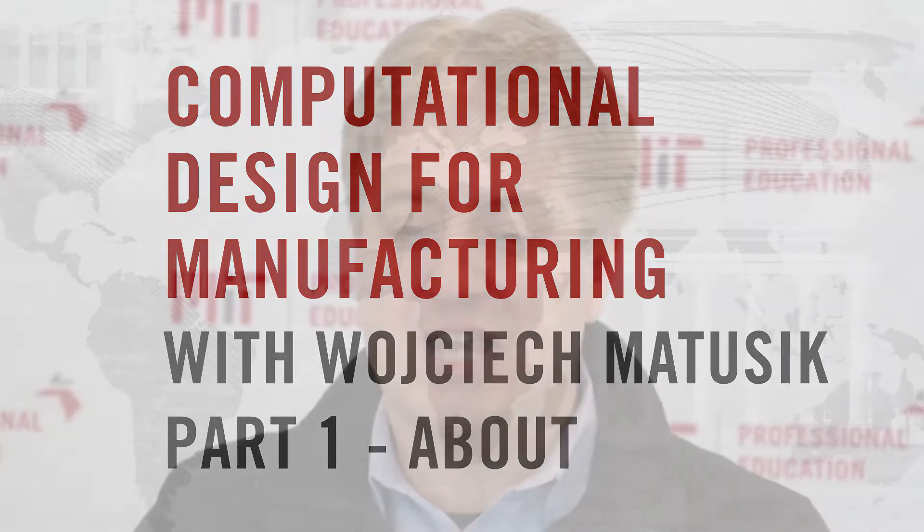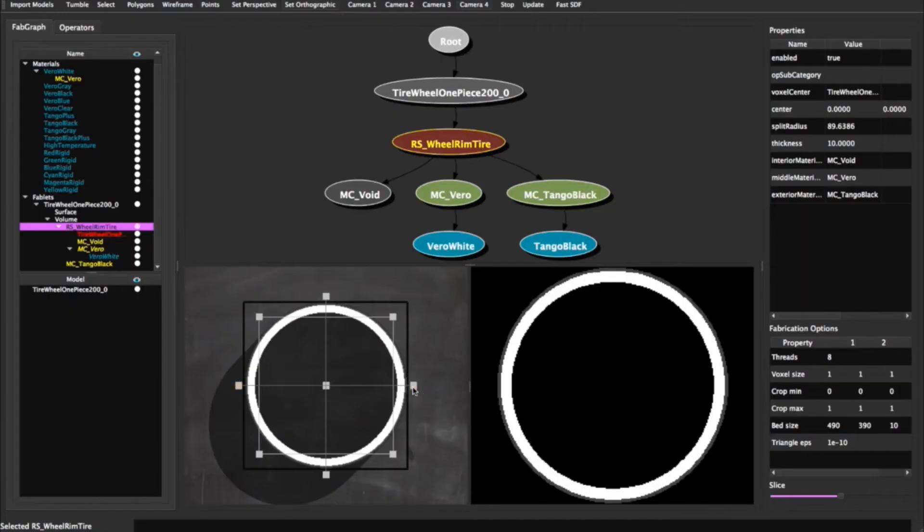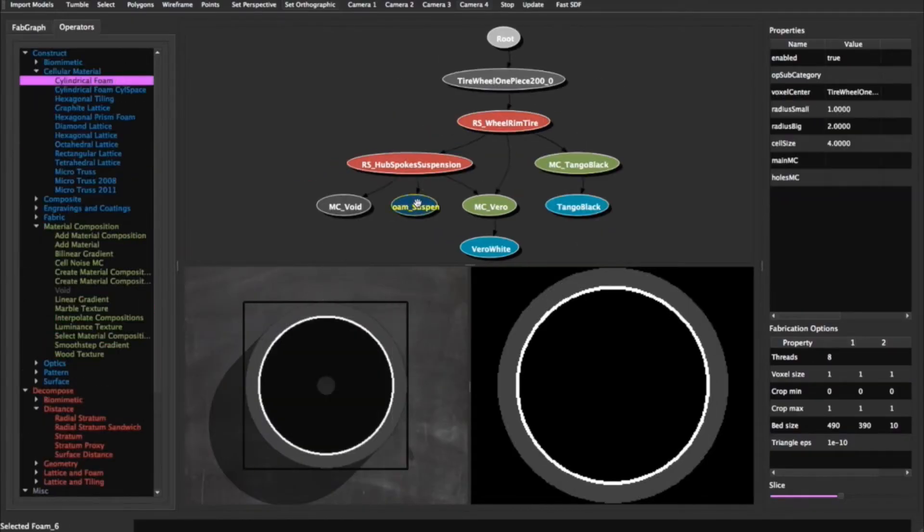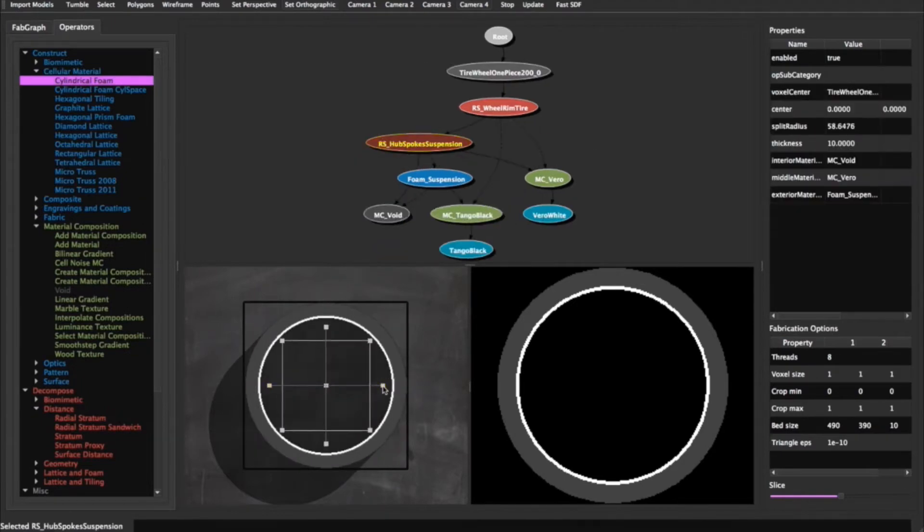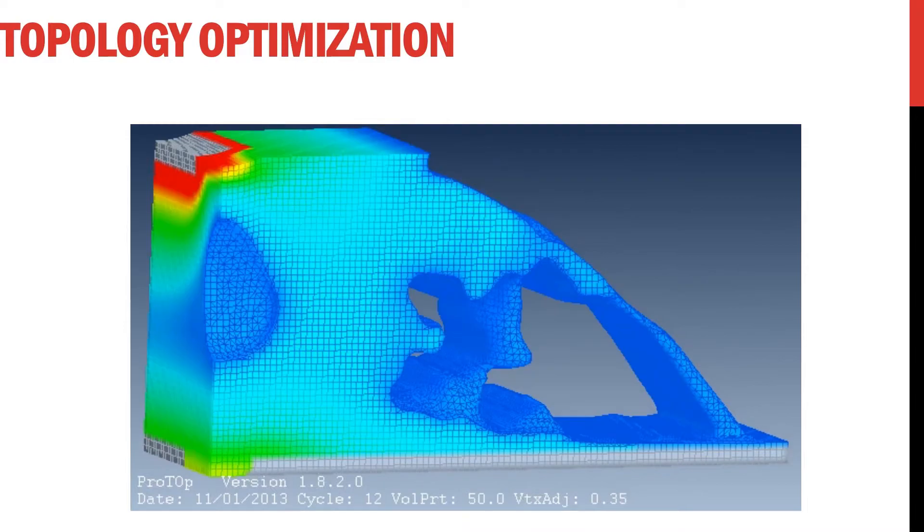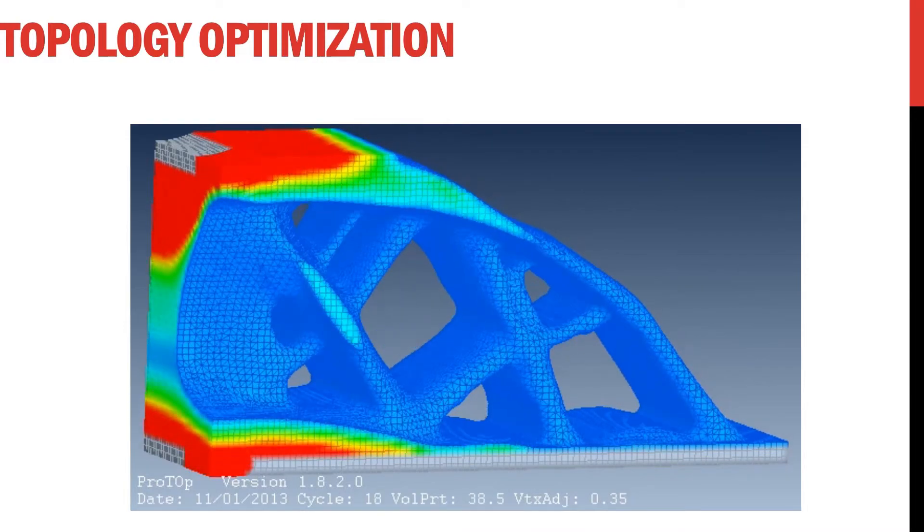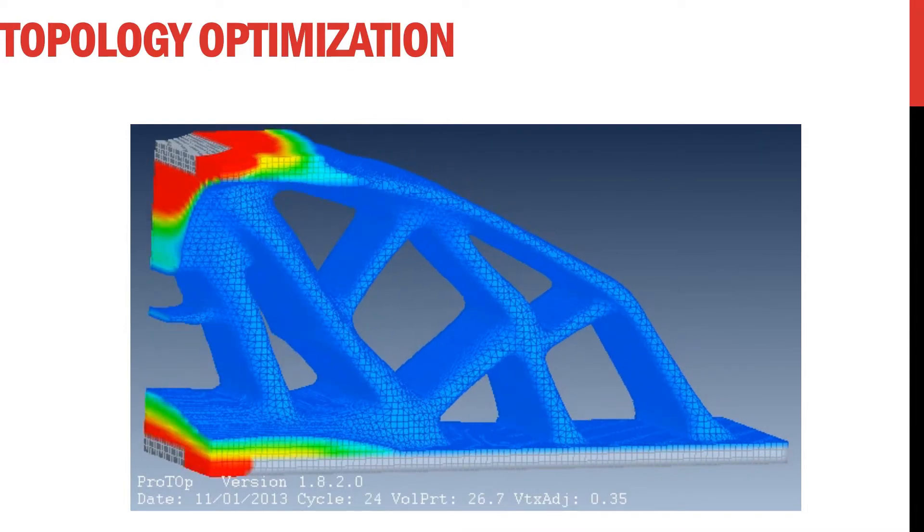We are offering a new course on computational design for manufacturing. What we are starting to see here is the expanding capabilities of current manufacturing hardware and specifically automated manufacturing hardware. This allows even mass production of different types of parts.